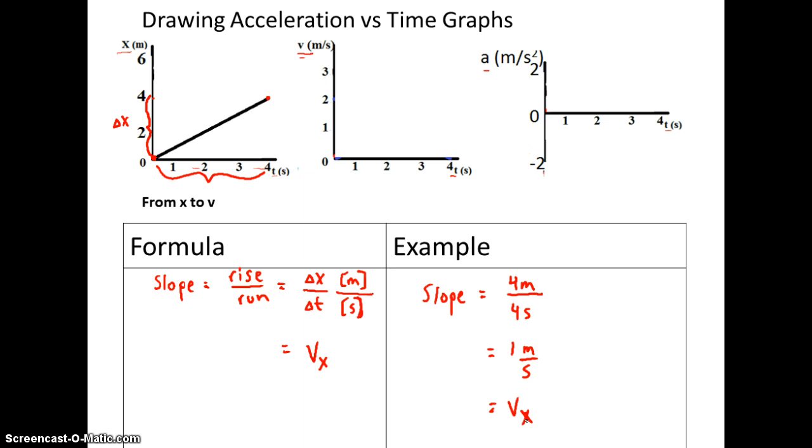If we were to graph this, 1 meter per second, the slope's not changing. So it would just be 1 meter per second for 4 seconds, a straight line across like that, constant velocity.